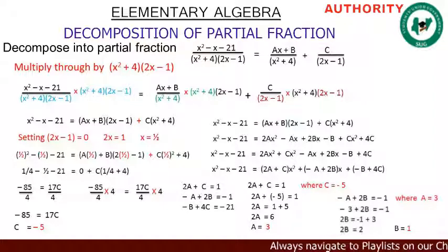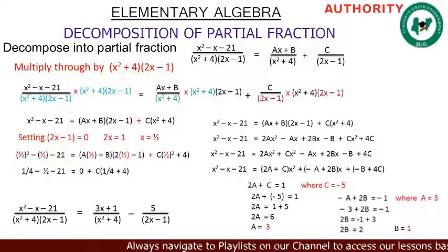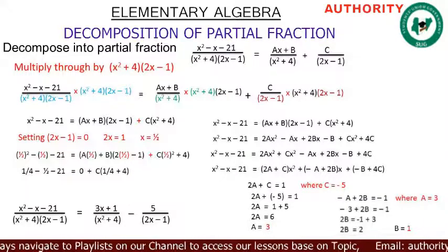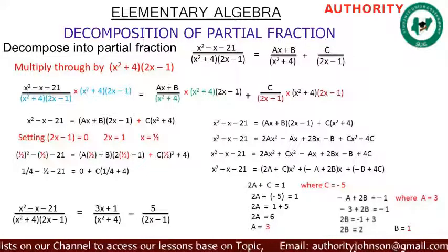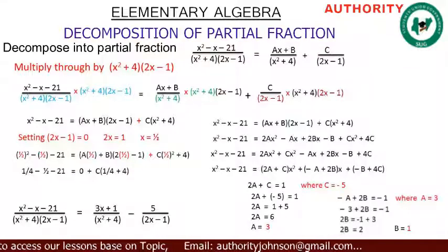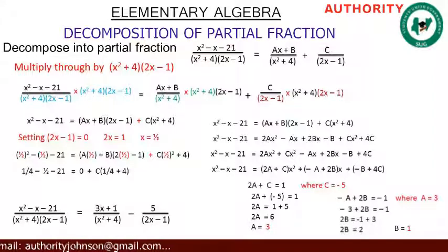We have found a equals 3, b equals 1, and c equals minus 5. Substituting back, the decomposition is: (x squared minus x minus 21) over (x squared plus 4)(2x minus 1) equals (3x plus 1) over (x squared plus 4) minus 5 over (2x minus 1). Thank you very much. If you haven't subscribed to our channel, please click the subscribe button.